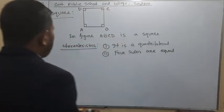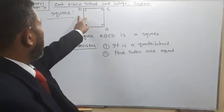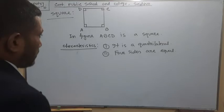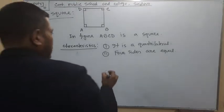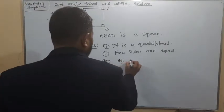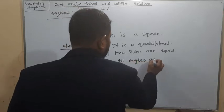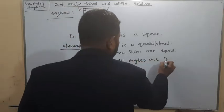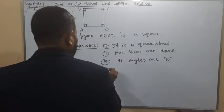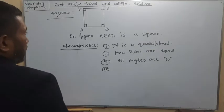Two opposite sides, like AB and DC, are parallel. AD and BC are also parallel. All angles are 90 degrees — that is, each is one right angle. And there are two diagonals.